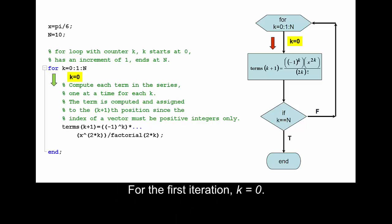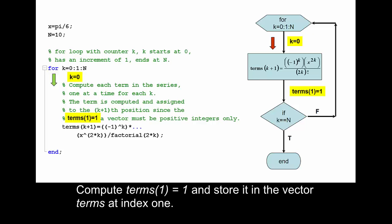For the first iteration, k equals 0. Compute terms(1) = 1 and store it in the vector terms at index 1.